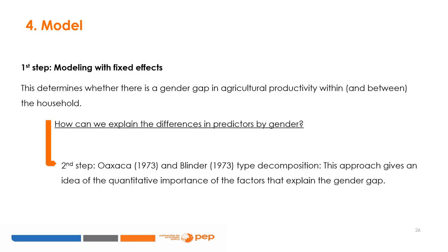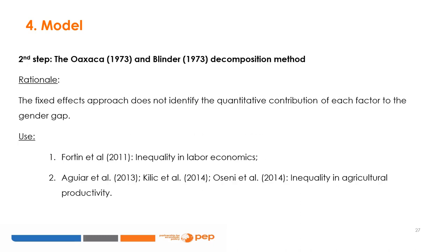The fixed effects model determines whether there is a gender gap in agricultural productivity within and between households. But when you are interested in knowing how to explain the differences in predictors by gender, you can resort to the Oaxaca and Blinder decomposition model. This gender gap analysis approach gives an idea of the quantitative importance of the factors that explain the gender gap. The use of the Oaxaca-Blinder decomposition is justified because the fixed effects approach doesn't identify the quantitative contribution of each factor. Examples of its application include Fortin et al. 2011 and Aguar et al. 2013.